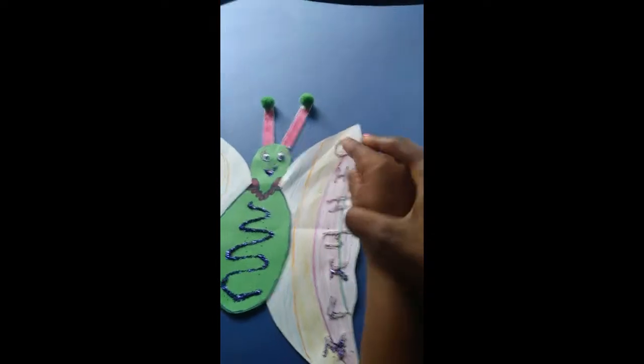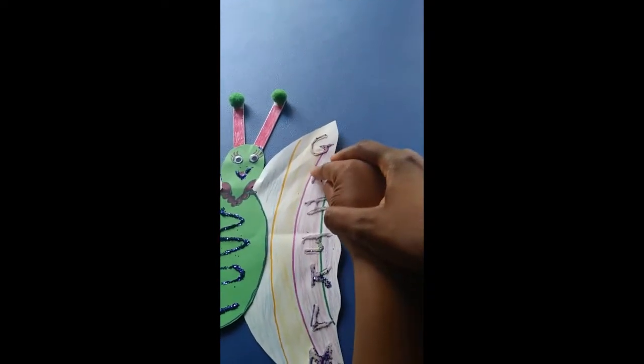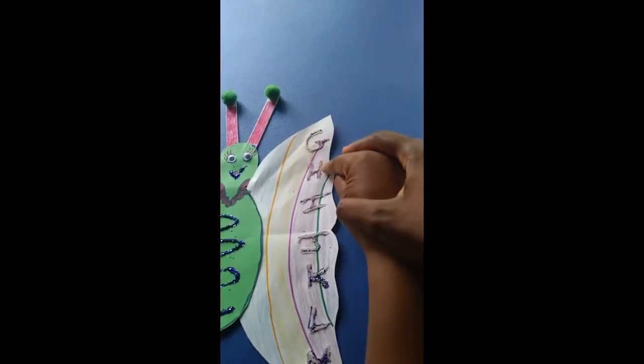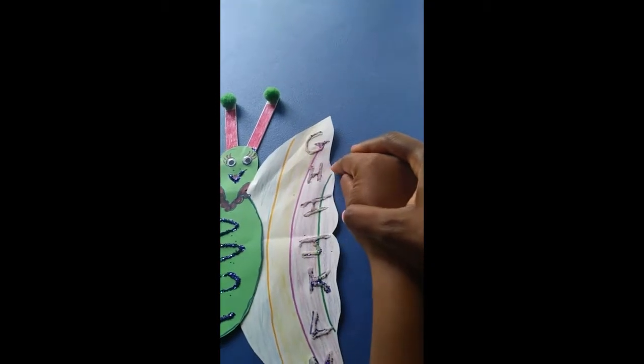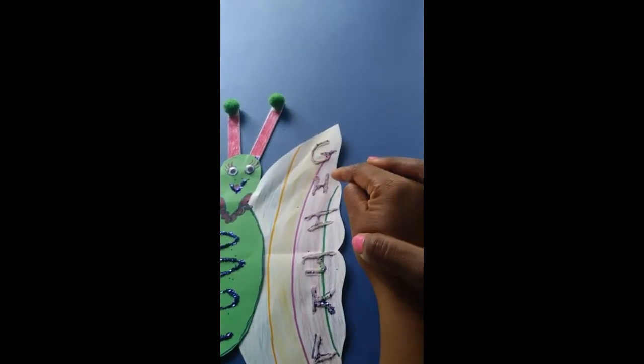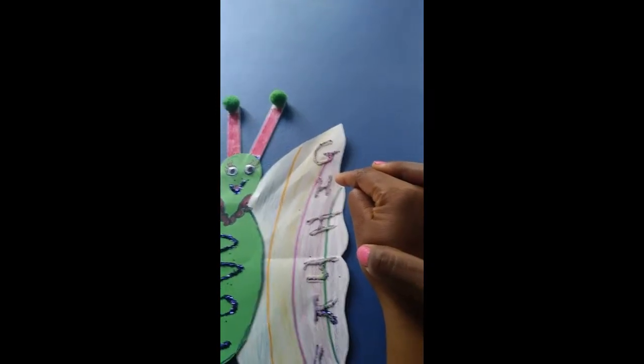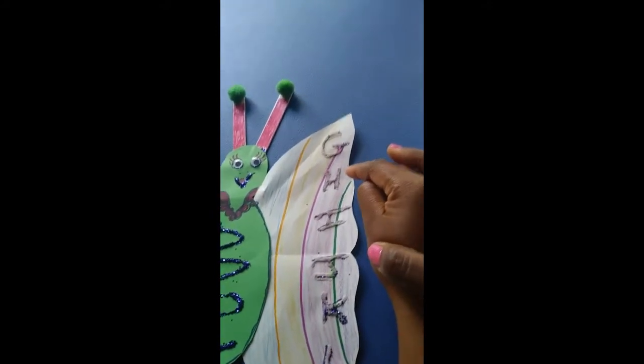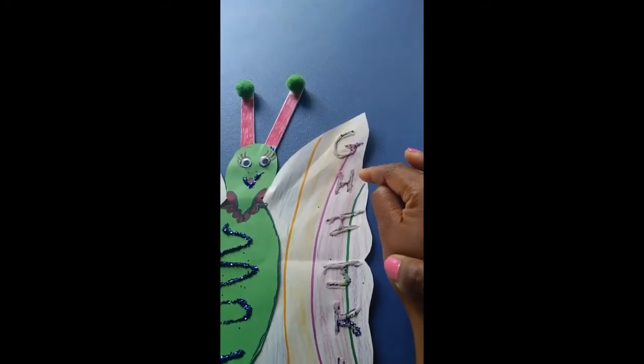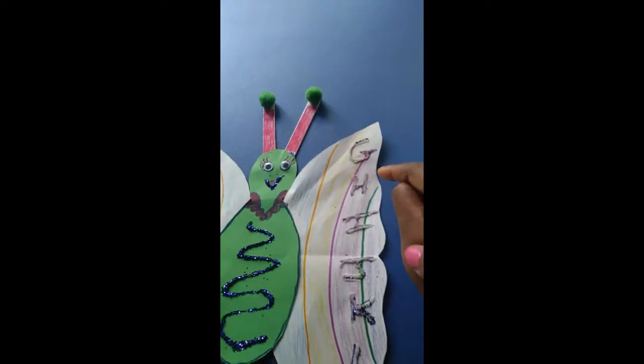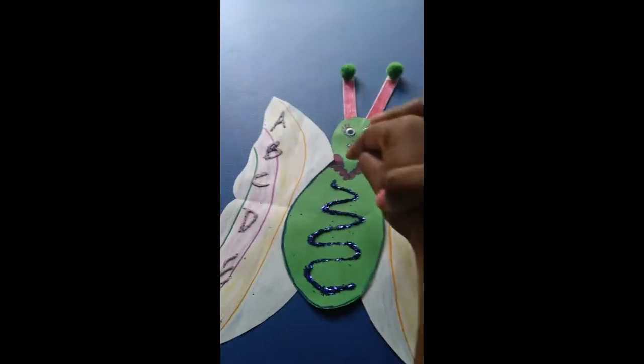Let's feel how the letter H is made. Down, up, across, down. That's the letter H. The letter H makes the sound. Can you say it? Good job.